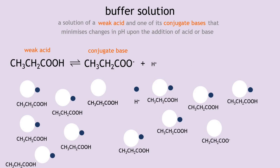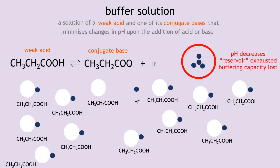But if we continue adding more acid — more hydrogen ions — one might react with the remaining propanoate ion, but eventually no more propanoate ions remain. We say the reservoir has been exhausted. The remaining hydrogen ions have nothing else to react with, so the pH will decrease due to an increase in hydrogen ion concentration. The conjugate base reservoir has been exhausted and the buffering capacity has been lost. A buffer solution only works when we're adding very small amounts of acid or base — if we add large amounts, the buffering capacity will be lost.